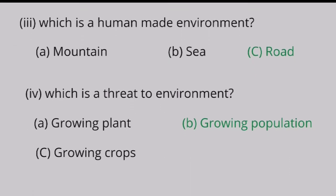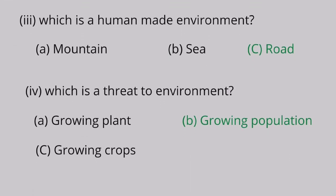Question 3: Which is a human-made environment? A. Mountain, B. Road. Road is the correct answer. Road is a human-made environment.